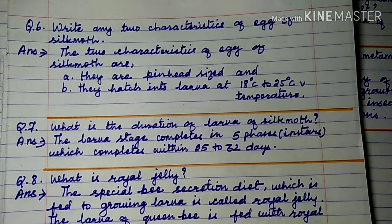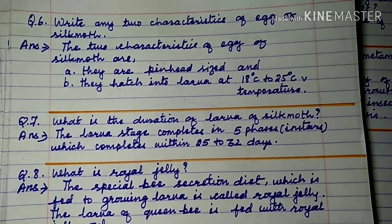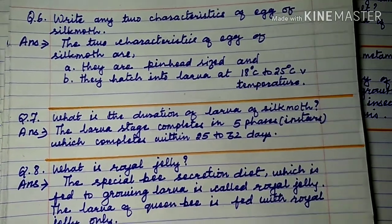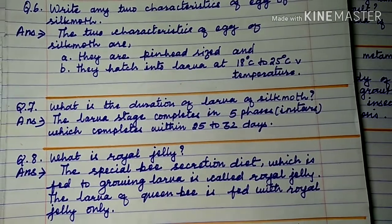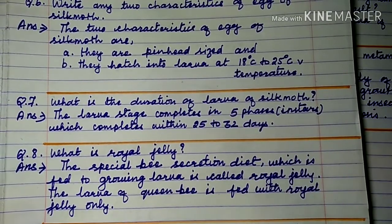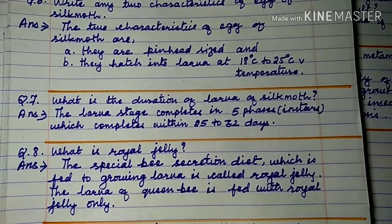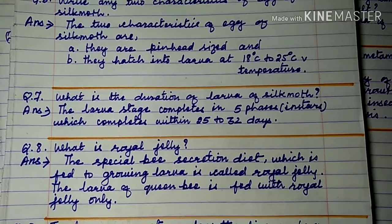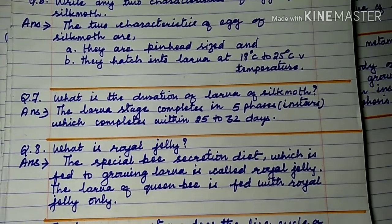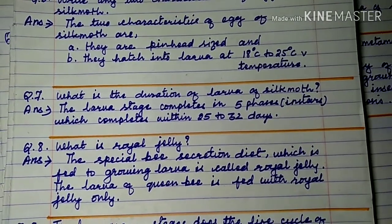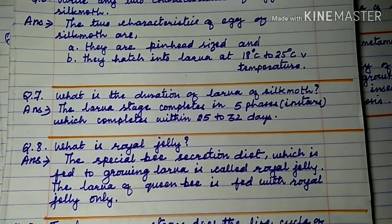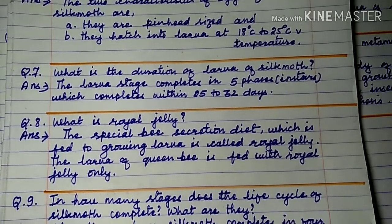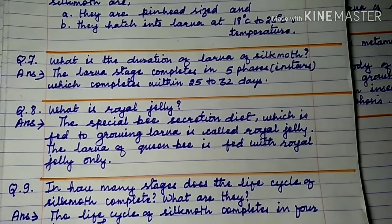Question number 7: What is the duration of the larval stage of silk moth? The larval stage completes in five phases or instars, which is completed within 25 to 32 days.